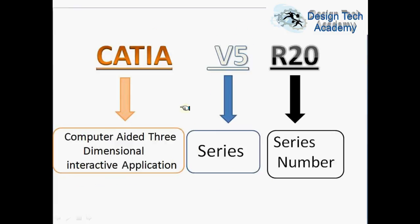What is the meaning of V5 and R20? It's an example only. CATIA is the software name, V5 refers to the series, and R20 refers to the release number of CATIA.